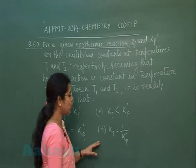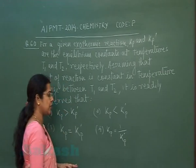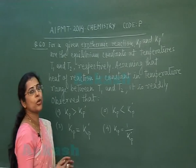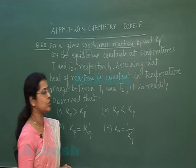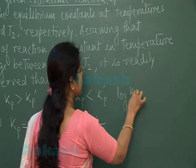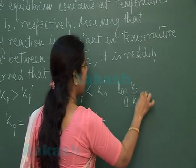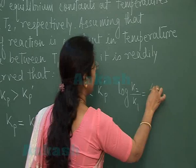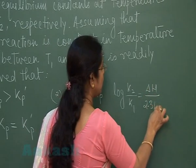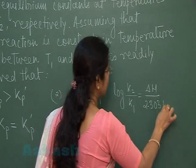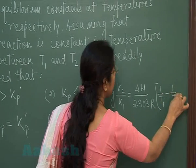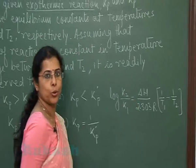And the fourth option is Kp equals 1 by Kp'. Now, two equilibrium constants are related to each other by the expression: log(K2/K1) = (ΔH / 2.303R) × (1/T1 − 1/T2).